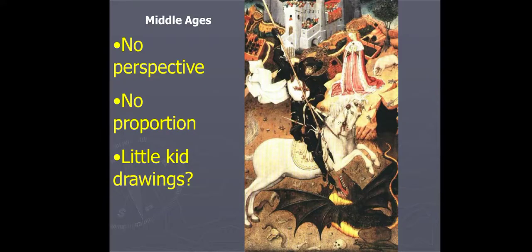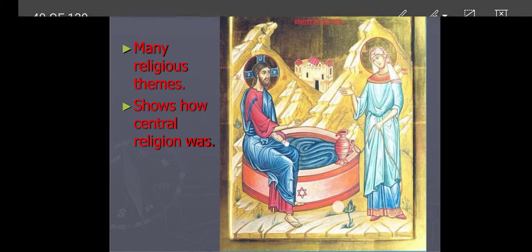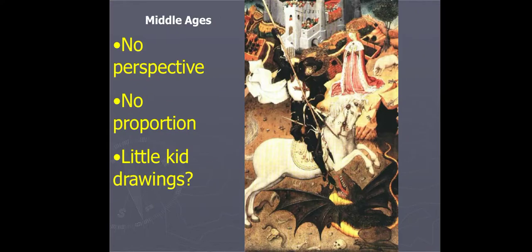Here is the art of the Middle Ages. You can notice that they put no perspective — the place doesn't matter there, and there is no proportion in the diagram. It was like a little kid's drawing. Like a small kid drew that picture — it seems like that.